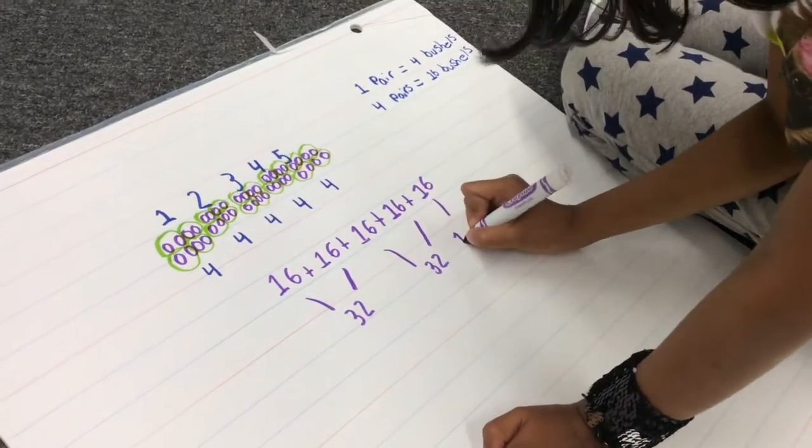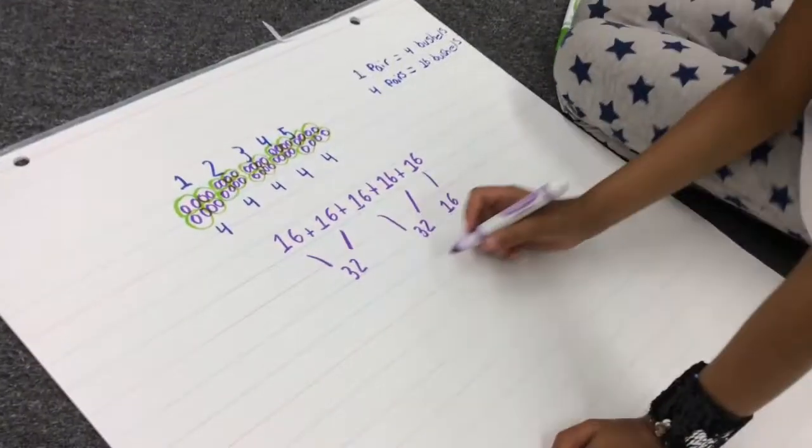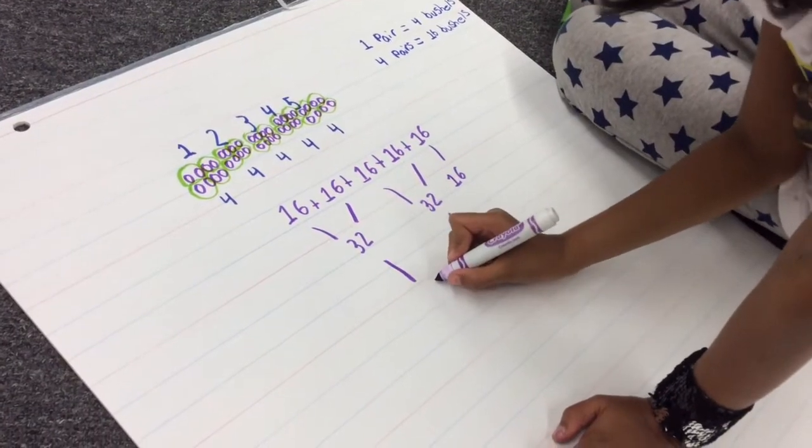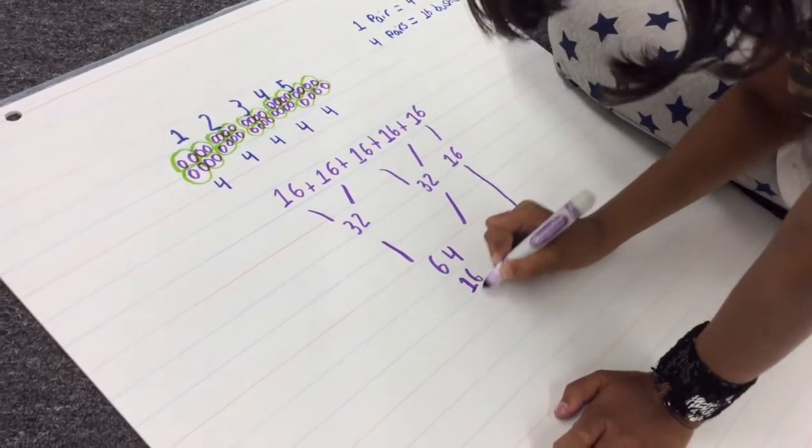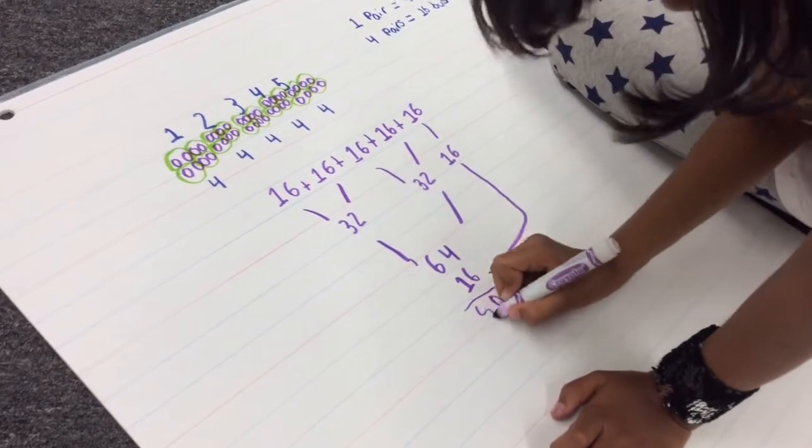We used repeated addition to add up all the bushels. The sixteen became thirty-two, the thirty-twos became sixty-four, and the extra sixteen made eighty bushels in all.